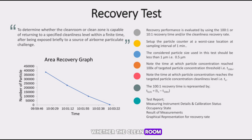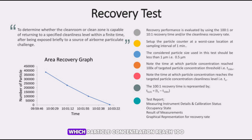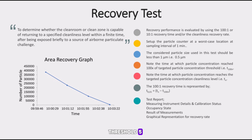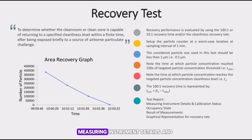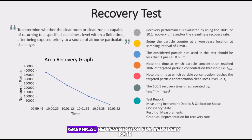Recovery Test — Purpose: to determine whether the cleanroom or clean zone is capable of returning to a specified cleanliness level within a finite time after being exposed briefly to a source of airborne particulate challenge. Key points: recovery performance is evaluated using the 100:1 or 10:1 recovery time or the cleanliness recovery rate; set up the particle counter at a worst-case location at a sampling interval of 1 minute; the considered particle size should be less than 1 micrometer; note the time at which particle concentration reaches 100× the targeted particle concentration threshold; note the time at which particle concentration reaches the targeted cleanliness level. Test report includes: measuring instrument details and calibration status, occupancy state, result of measurements, and graphical representation for recovery rate.